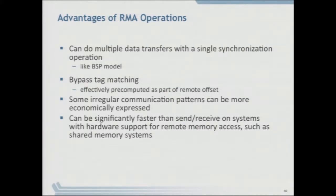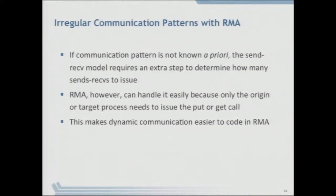Otherwise you need an additional step to figure out who's going to send to you and who all you need to send to, requiring additional communication just to issue the two-sided operations. On some systems — particularly those with hardware support for remote memory access — it can also be faster than point-to-point. If the communication pattern is not known a priori, one-sided is a better alternative in many cases.